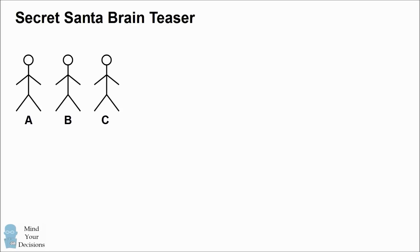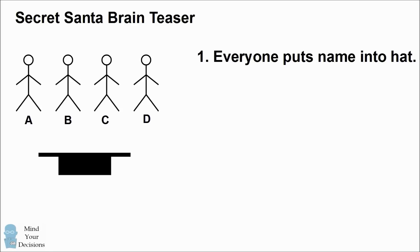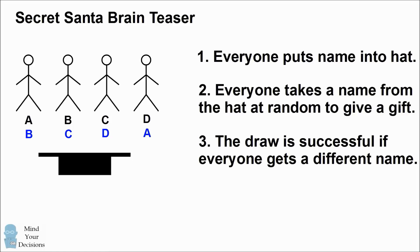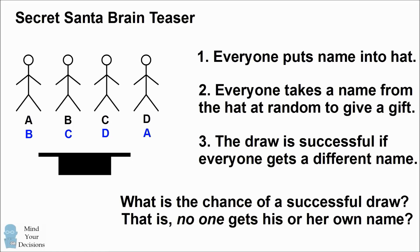Hi, this is Presh Talwalkar. A group of people decide to play Secret Santa. To begin, each person writes their name on a piece of paper and places that paper into a hat. Each person then takes a name from the hat at random, and that's the person to give a gift to. The draw is successful if everyone gets a different name. So your puzzle is, what's the probability of having a successful draw? That is, what's the chance that no one gets his or her own name?